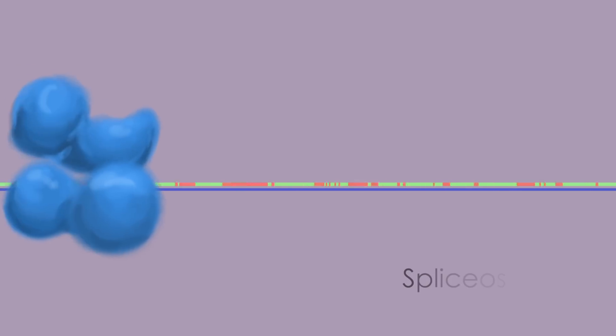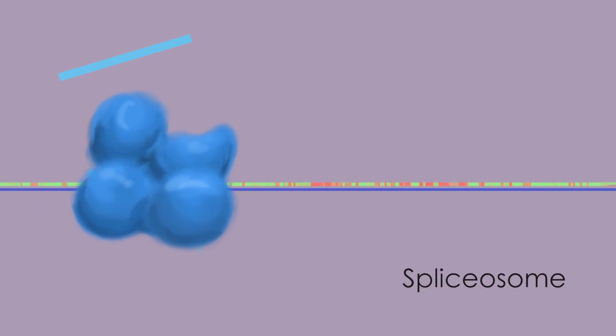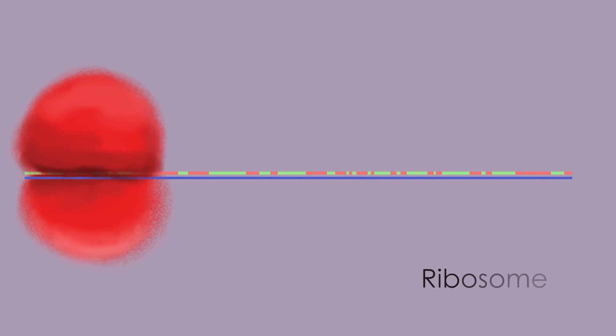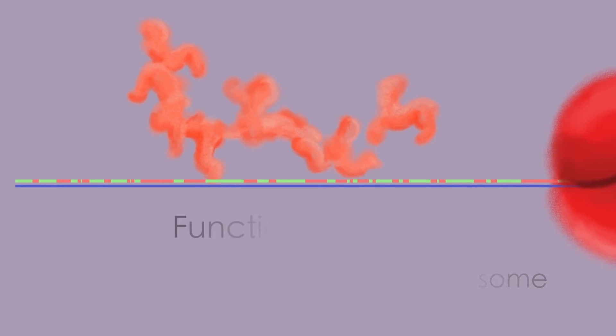To make a protein, the cell uses its DNA as a blueprint to make RNA by splicing together the essential bits of code. The cell machinery then reads the RNA to build the protein.